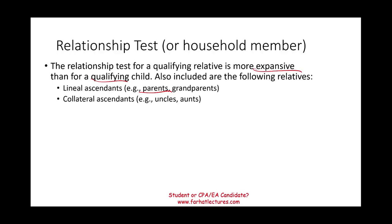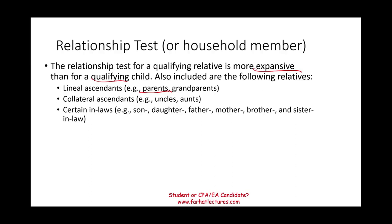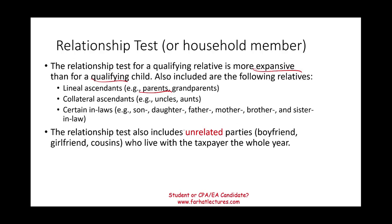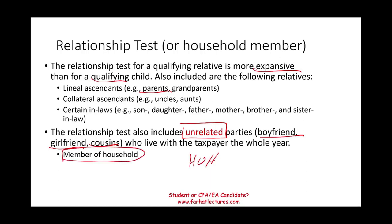The relationship test also includes unrelated parties — a boyfriend, girlfriend, or cousins who live with the taxpayer the entire year. This is the member of household test. Remember: a boyfriend or girlfriend cannot qualify you for head of household, but they can be considered your dependent for dependency purposes. Those cannot qualify you for head of household — just want to make sure that's clear.